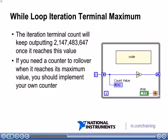If you take a look at the block diagram here, that's exactly what we've done. Notice that we have a shift register initialized with a value of 0. We keep incrementing it and saving the incremented value back into the shift register. The data type here is an unsigned 32-bit integer, so once that count gets to the maximum value of a U32 and you add one to it, it's going to automatically roll over to 0. So if you need a counter to roll over, implement logic like this instead of relying on the iteration terminal in the while loop.